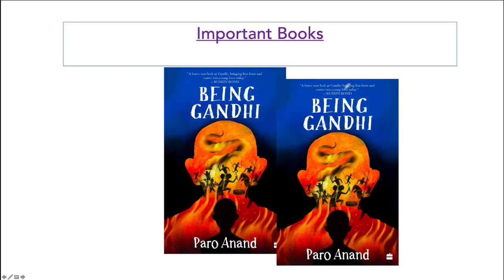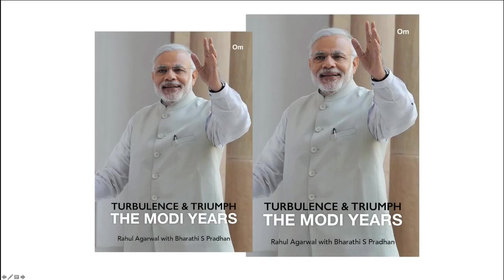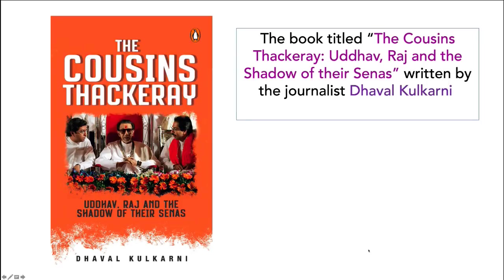Now let's look at important books from these 15 days. There is a book written by Paro Anand called Being Gandhi. There is a book about Modi's governance called Turbulence and Triumph: The Modi Years, written by Rahul Agarwal and Bharti Pradhan. Then there is a book by Dhaval Kulkarni about Uddhav Thakre and Raj Thakre called The Cousins Thakre: Uddhav, Raj and the Shadow of Their Senas — that is the Maharashtra Navanirman Sena and the Shiv Sena.